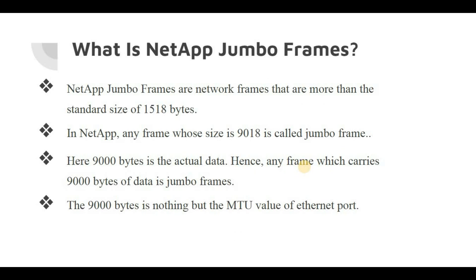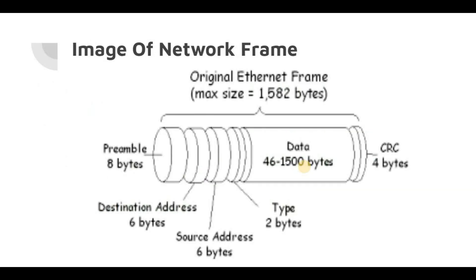NetApp jumbo frames are network frames that are more than the standard size of 1518 bytes. In NetApp, any frame whose size is 9018 bytes or more is called a jumbo frame. The 9000 bytes here is the actual data — so a jumbo frame carries 9000 bytes of data in a single frame, and the remaining bytes store frame information. This value of 9000 bytes is nothing but the MTU value of the Ethernet port, also called the Maximum Transmission Unit. The 1500 bytes we saw earlier is also an MTU value.